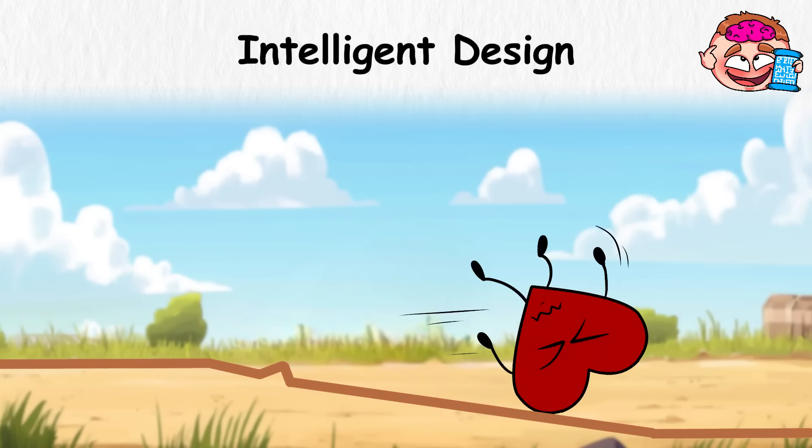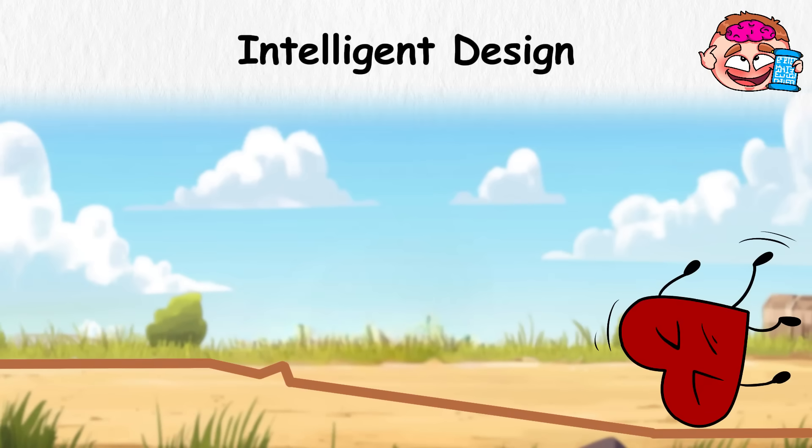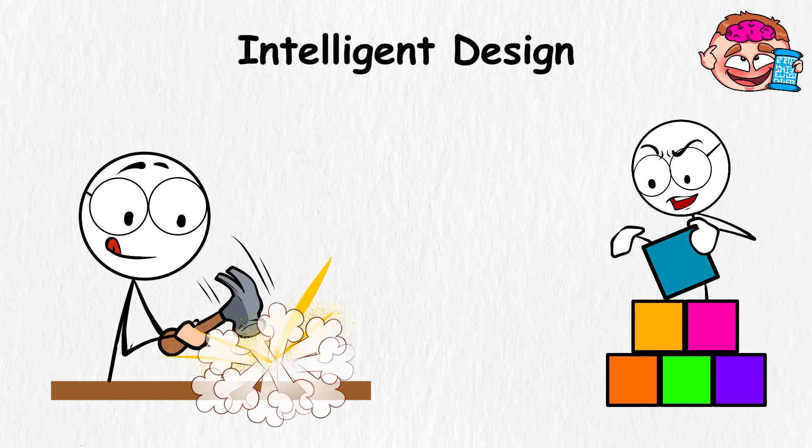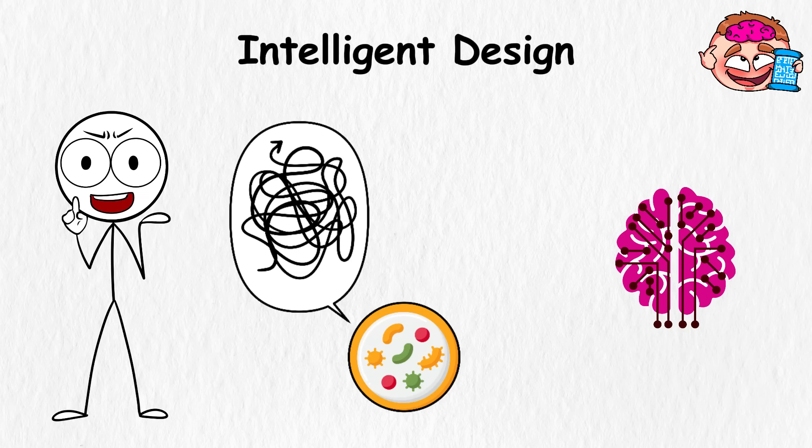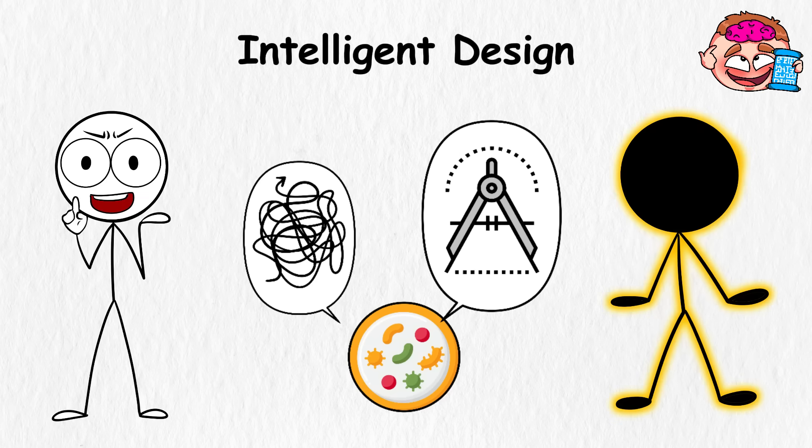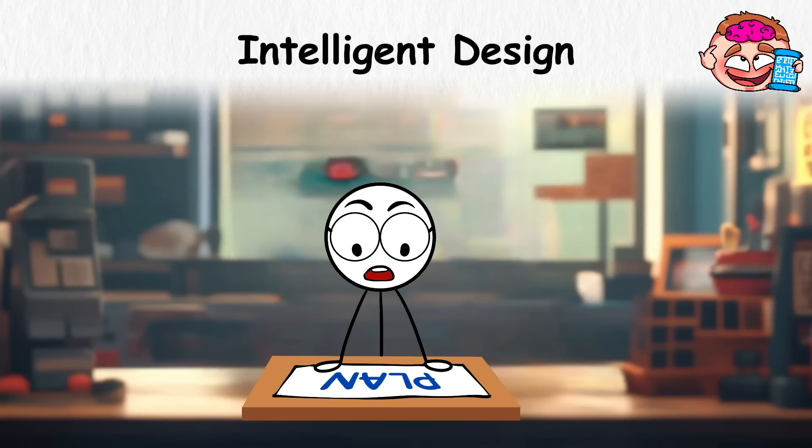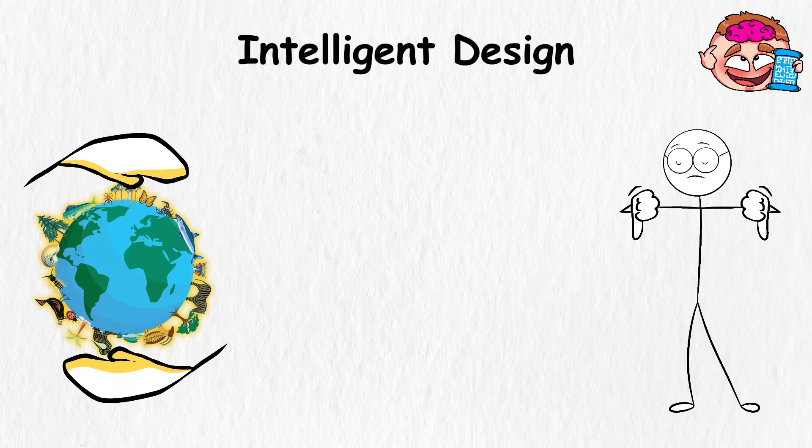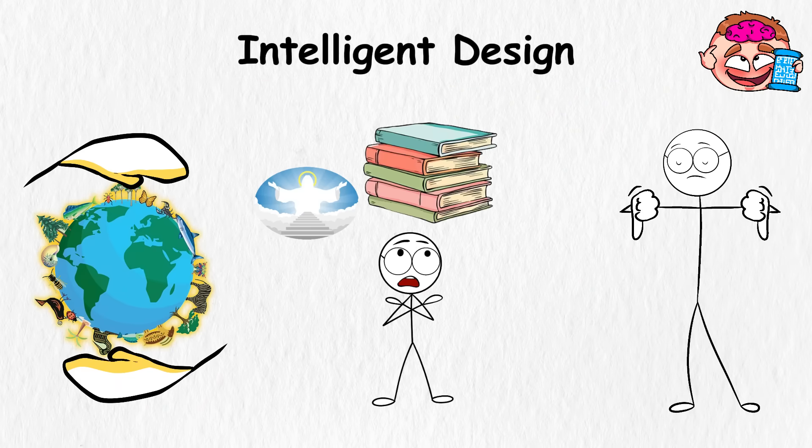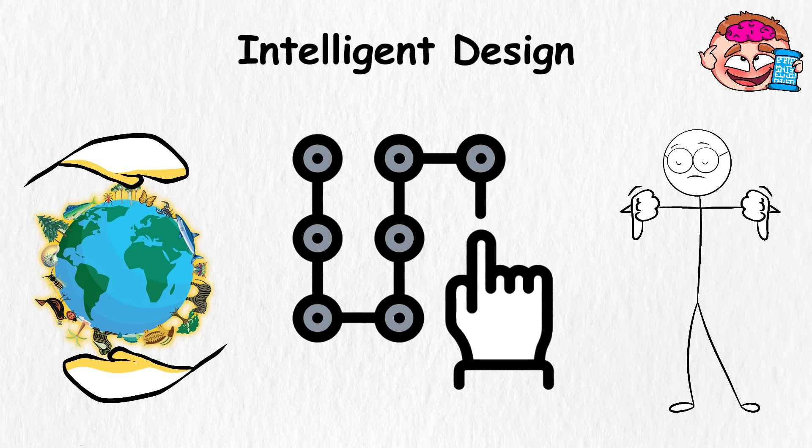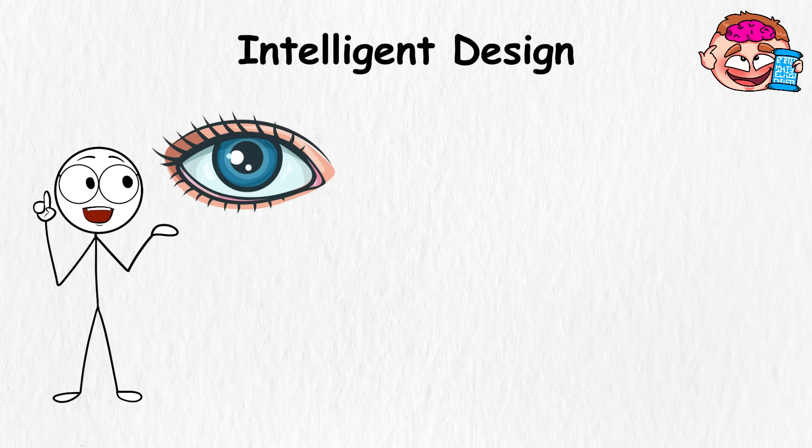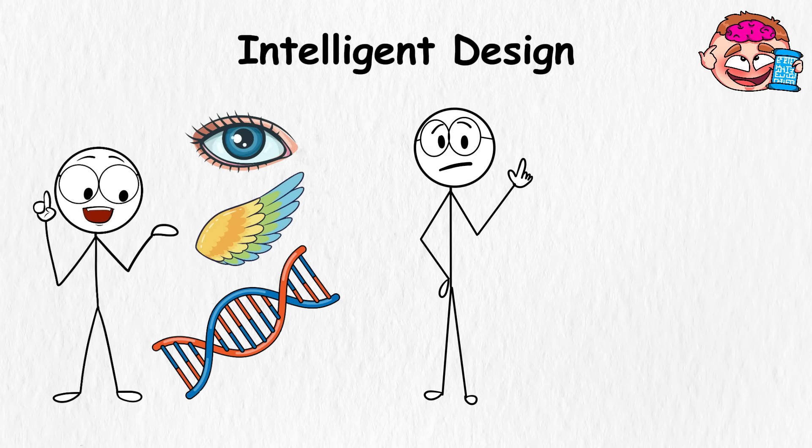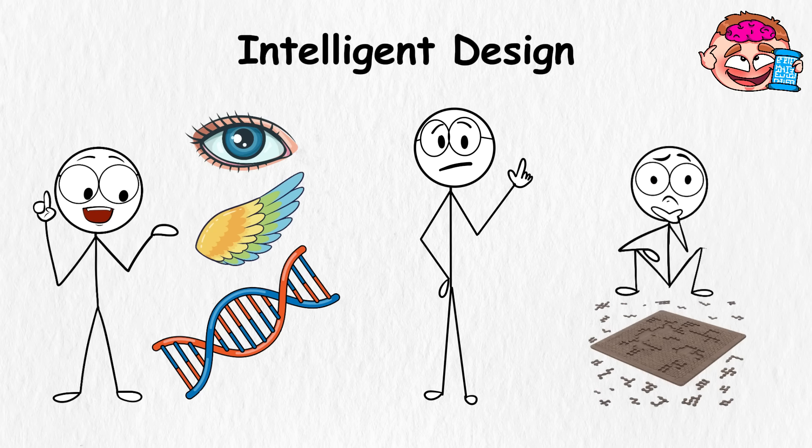Intelligent Design. Some say life didn't just stumble in like it forgot to knock. It was carefully put together. It was built, piece by piece. According to Intelligent Design, living things are too complex, too precise, to have just evolved on their own. There had to be a mind behind it. A plan. This isn't the same as a religious creation story. It doesn't name a god, quote a book, or mention a garden. It just points to patterns in nature that look too perfect to be random. Things like the human eye, bird wings, or DNA. Systems that feel like someone sat down and solved a puzzle way too complicated for evolution to explain on its own.